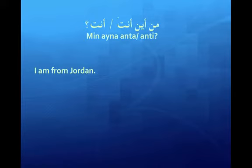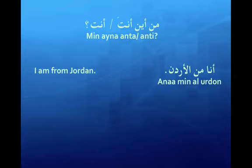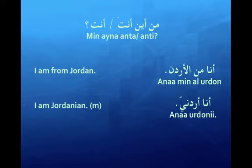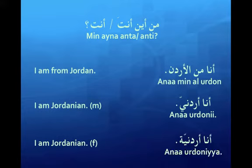I am from Jordan. I am Jordanian — boy: أنا أردني; girl: أنا أردنية. Notice how the word أردن changed into أردني and then أردنية. We added the 'ee' sound to show nationality, and added the 'iyya' sound at the end to show that it's a nationality for a female. That's the flag of Jordan.